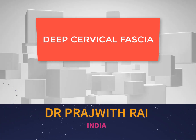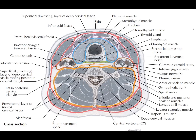The fascias of the neck are divided into superficial cervical fascia and deep cervical fascia. The superficial cervical fascia is the fascia present deeper to the skin. Deeper to the superficial cervical fascia, we have the deep cervical fascia.